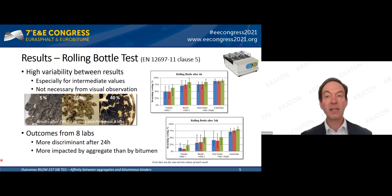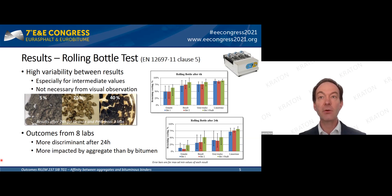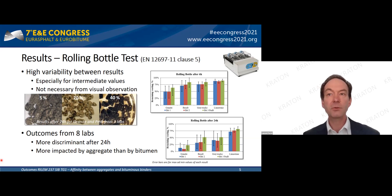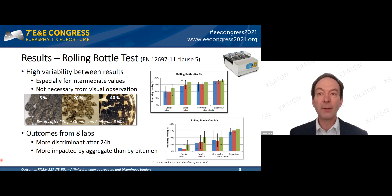Here are the main results for the rolling bottle test — it consists of rolling pre-coated aggregates fully immersed in water, then visually evaluating the remaining bitumen coating. The test was run for 6, 20, and even up to 72 hours for some aggregates. It was the most popular test, run by eight laboratories generating 192 values. As you can see on the graph, there was a high level of variability between labs, especially for intermediate and low values — we can argue these results come from visual observations that introduce a human factor.